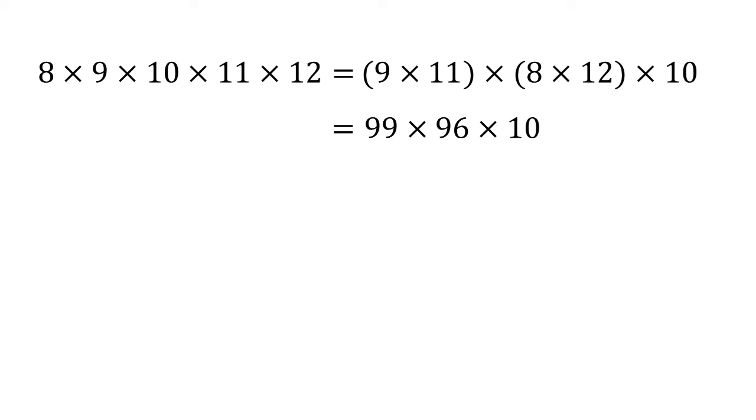Looking at 99, that's only 1 off 100, so it's a fairly easy number to multiply by. To do 99 × 96, we can do 100 × 96 which is 9600, and then take away the extra 96.